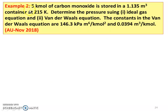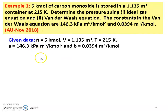Example 2. 5 kilomole of carbon monoxide is stored in a 1.135 m³ container at 215 Kelvin. Determine pressure using the ideal gas equation and Van der Waals equation. The Van der Waals constants are: A = 146.3 kPa·m⁶ per kilogram-mole squared and B = 0.0394 m³ per kilogram-mole.